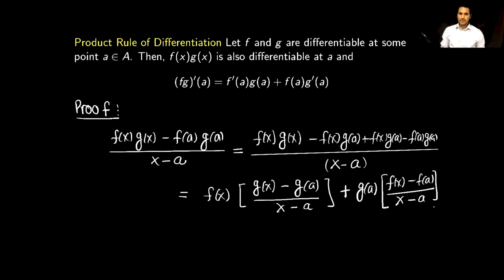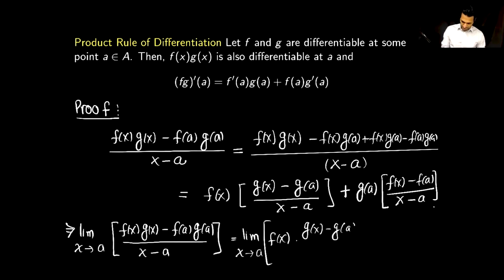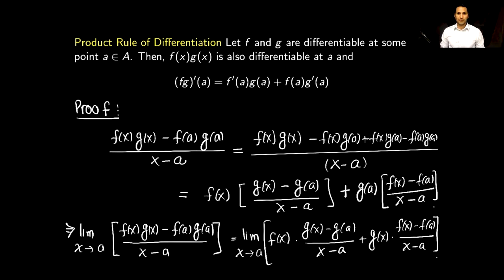Now I will take the limit as x approaches a on both sides. To use the algebraic limit theorem on the right-hand side, we need to ensure that each limit inside the parentheses exists. As you can see, the function f(x) is differentiable at a, so this implies the function is also continuous at a.